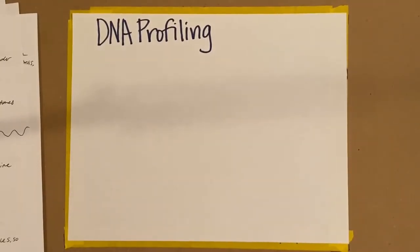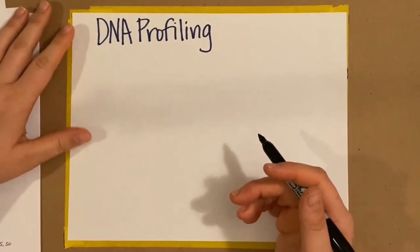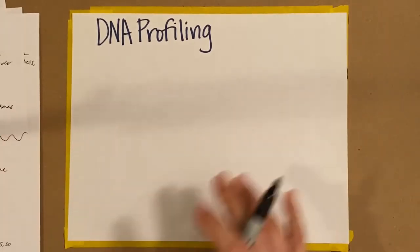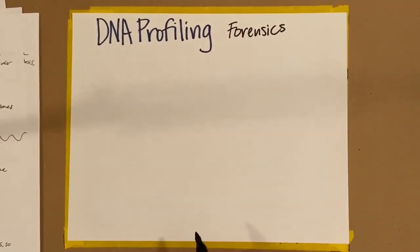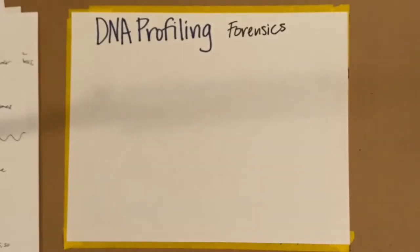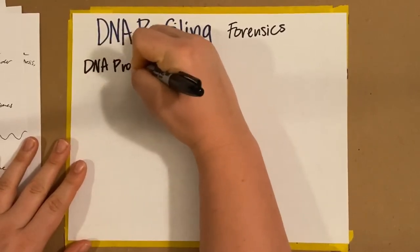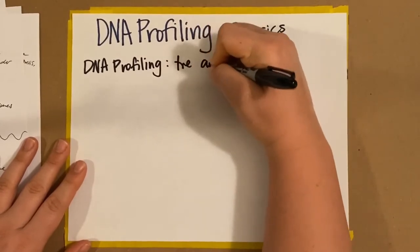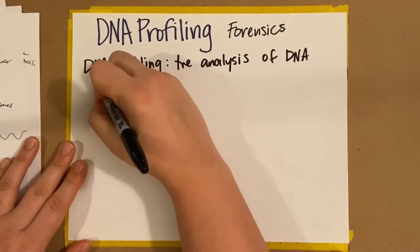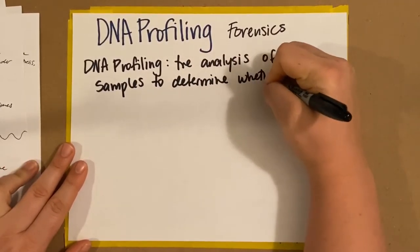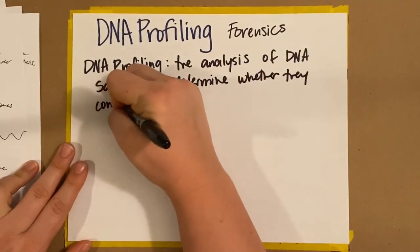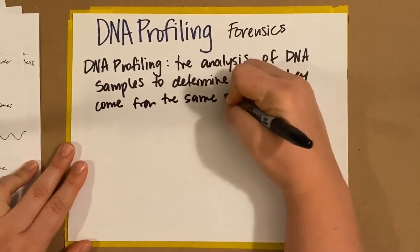We're going to pick up and start talking about DNA profiling. This is another type of DNA technology, less about human health. One of the big ways we've used DNA profiling is to determine if a DNA sample comes from an individual. DNA profiling is the analysis of DNA samples to determine whether they come from the same individual.